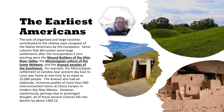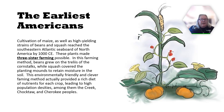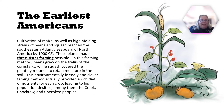However, mysteriously — perhaps due to prolonged drought — all of these ancient cultures fell into decline by about 1300 CE. Cultivation of maize, as well as high-yielding strains of beans and squash, reached the southeastern Atlantic seaboard of North America by 1000 CE, making three-sister farming possible. In this method, beans grew on the trellis of the corn stalks while squash covered the planting mounds to retain moisture in the soil. This led to high population densities, among them the Creek, the Choctaw, and the Cherokee peoples.